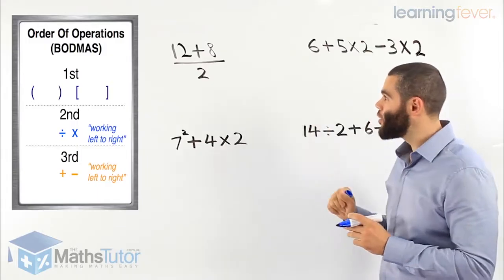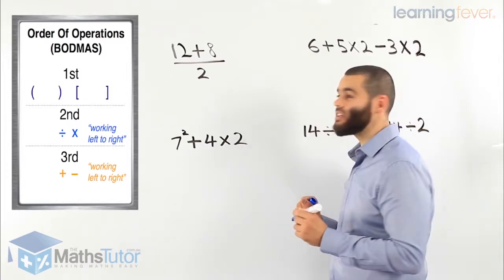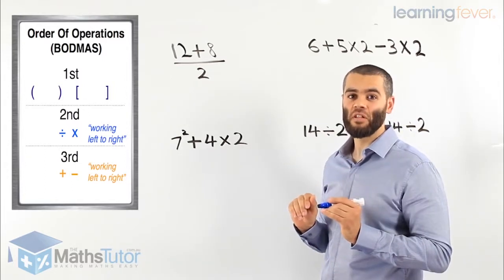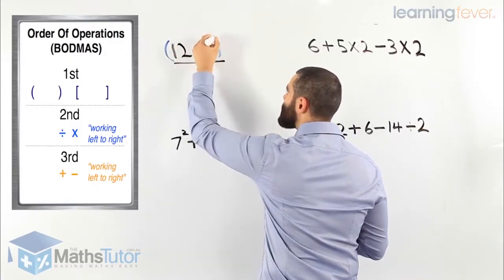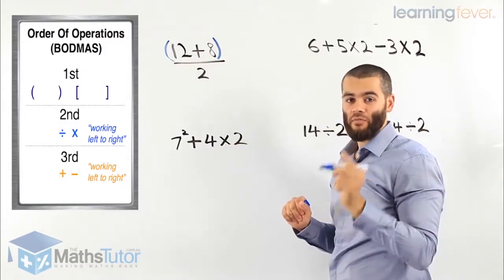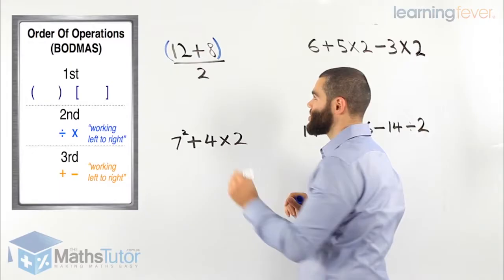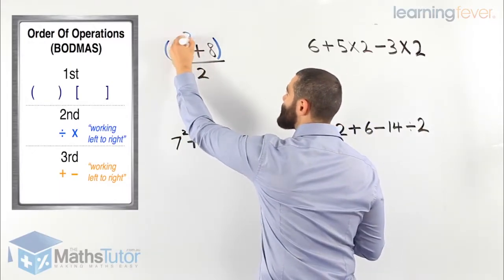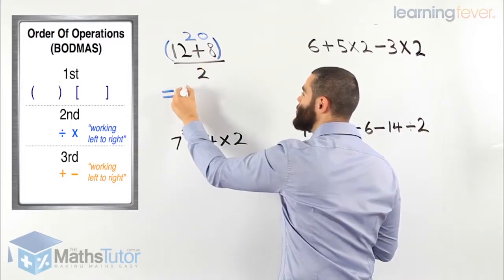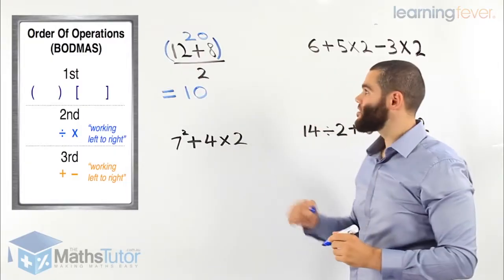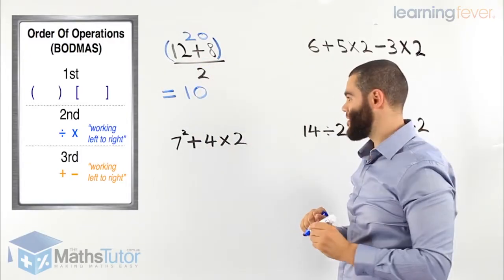In this example, do we have any brackets? No, we don't. So we move on and we notice we have a fraction: 12 plus 8 divided by 2. We always do the top first — everything is divided by 2. I've seen too many students make a mistake not realizing that everything on top is divided by the denominator at the bottom. 12 plus 8 is 20. 20 divided by 2 — our answer is 10.